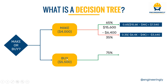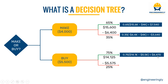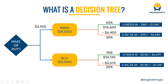The same applies for the buy option. If things go well, there is a 75% probability of making fourteen thousand one hundred and twenty-five dollars. If things do not go your way, there is a 25% probability of losing five thousand five hundred and seventy-five dollars. Multiplying probability by the difference gives six thousand four hundred and seventy dollars for success, and a loss of minus two thousand seven hundred and sixty-nine dollars for failure.